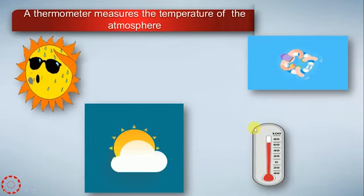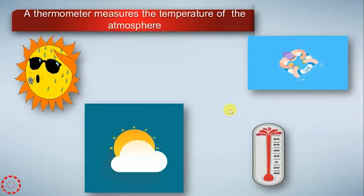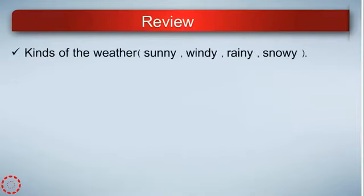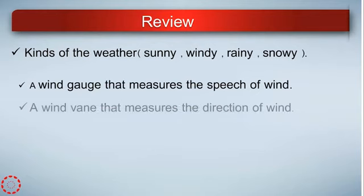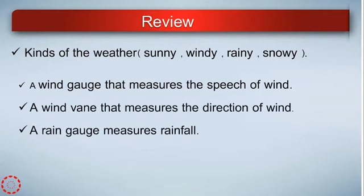The thermometer tells us the temperature of the atmosphere. Kinds of weather include: sunny, windy, rainy, and snowy. A wind gauge measures the speed of wind, and a wind vane tells us the direction of wind.